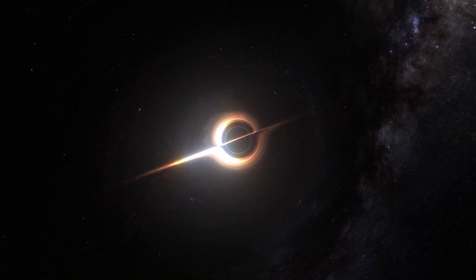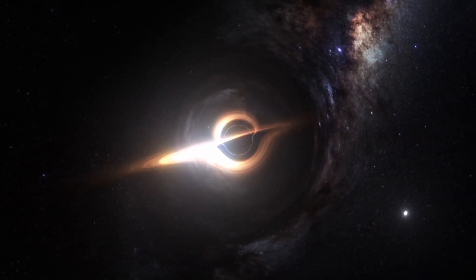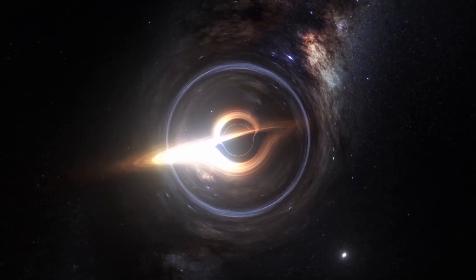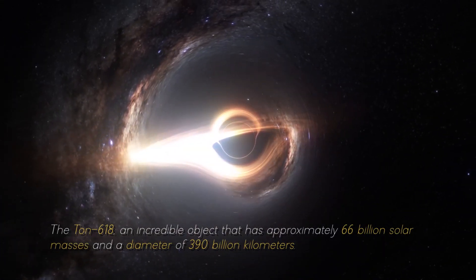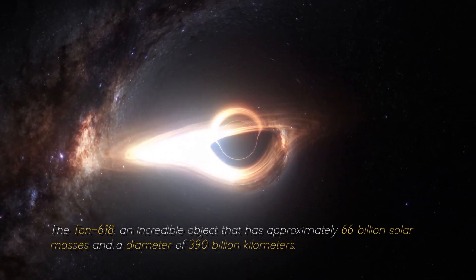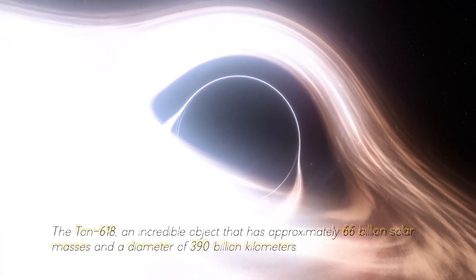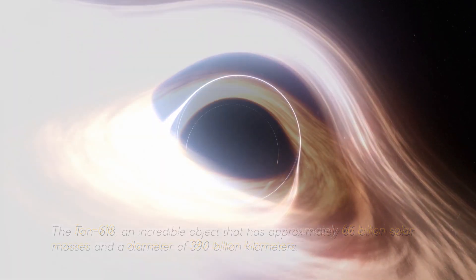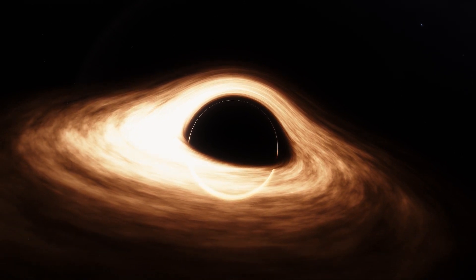Not everything ends here. This star cannot be compared with the most massive black hole in our cosmos, the Ton 618, an incredible object that has approximately 600 billion solar masses and a diameter of 390 billion kilometers. For now, we will stop measuring in kilometers and start measuring in light years.